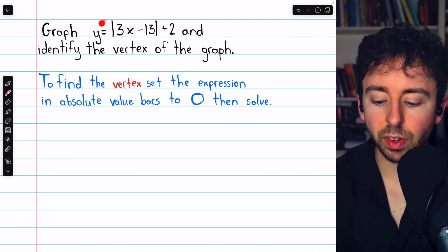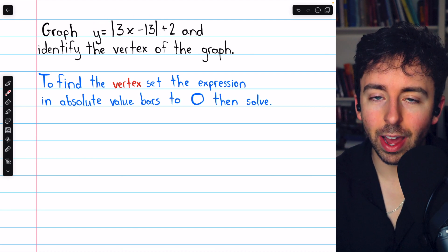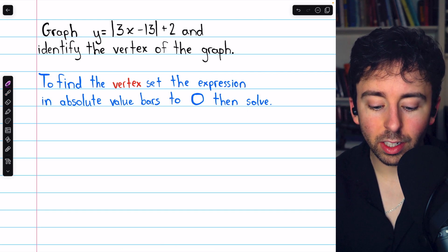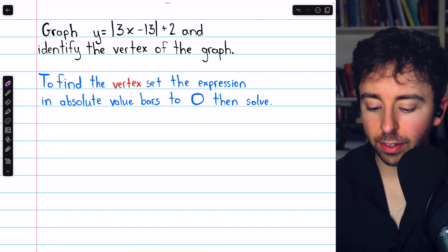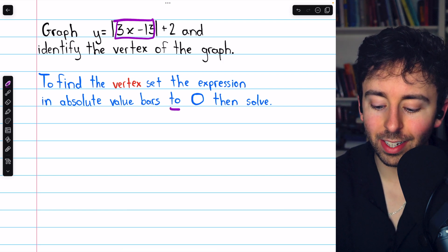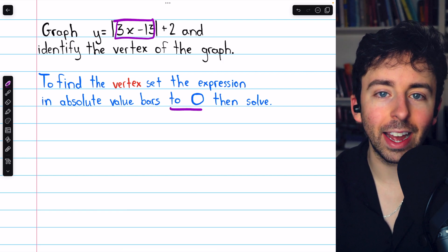In order to graph this absolute value equation and identify its vertex, we should begin by finding the vertex. To find the x-coordinate of the vertex, we have to set the inside of the absolute value bars to 0 and then solve for x.